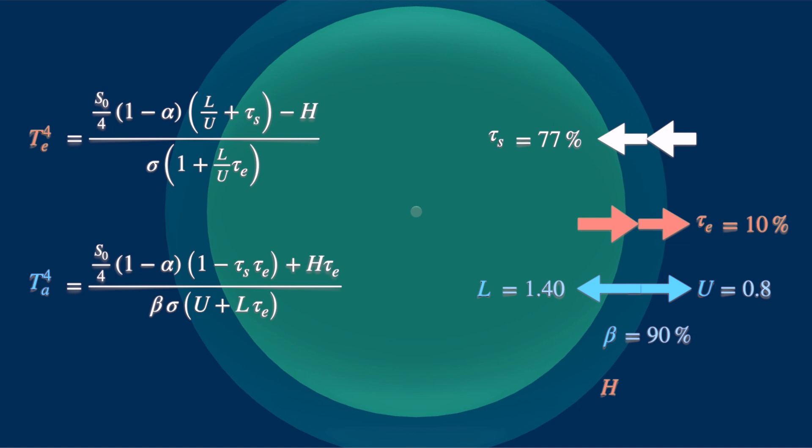Roughly speaking, 36 percent of the emission from the atmosphere is upward, with the remaining 64 percent downwards. And H is roughly equal to 100. Also alpha stays at 33 percent, as most of the reflection happens from the atmosphere anyways.